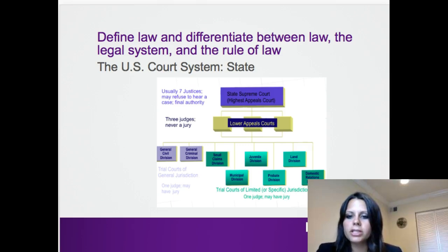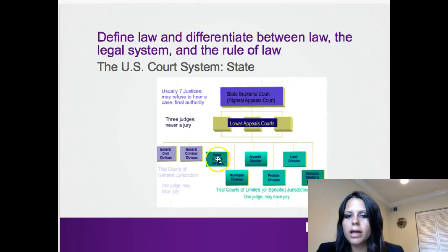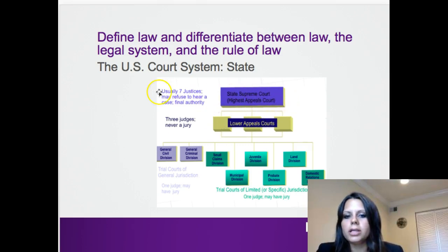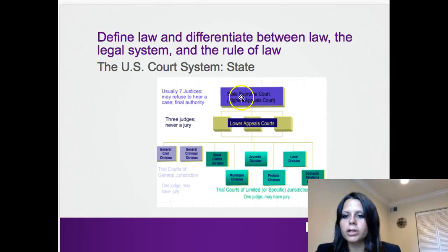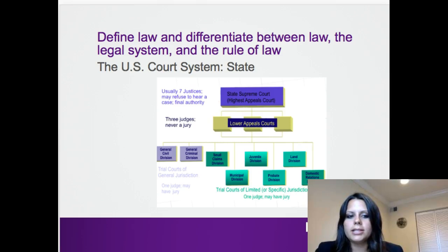At a state level, you'll see a similar construct — very dependent on the state you're in. There's a trial court level, appeals levels where there are three judges and no jury, and at the state Supreme Court level there are usually seven justices who can also refuse to hear a case and serve as a final authority. This will vary from state to state. For example, in Maryland our highest court is the Maryland Court of Appeals, whereas in other states they call themselves the New Jersey State Supreme Court.